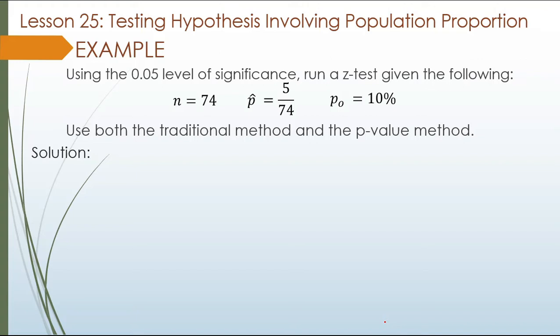For example, using the 0.05 level of significance, let's run a z-test given the following: n equals 74, p-hat equals 5 over 74, p-sub-o equals 10%. Let us use both the traditional and the p-value method.